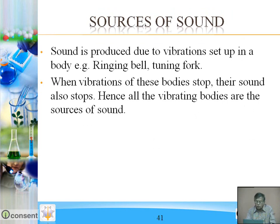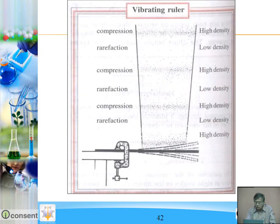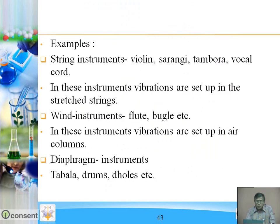Sound is produced due to vibrations set up in a body — for example, a ringing bell or tuning fork. When vibrations stop, the sound also stops. All vibrating bodies are sources of sound. String instruments such as violin, sarangi, tambura, and the vocal chord produce sound through vibrations set up in stretched strings.